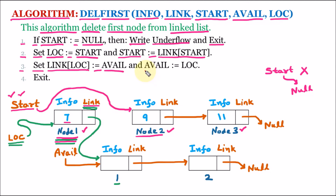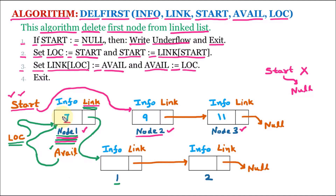Then avail is updated and set equal to loc. So avail is now holding the value of loc, and loc contains the address of node 1. That means avail is now pointing to node 1, and its previous value is updated. When node 1 becomes part of the avail list, its original value will be lost and not considered — we treat it as a free node.